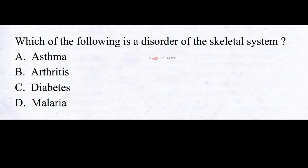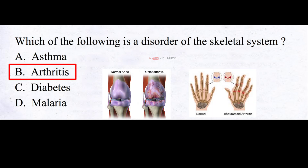Which of the following is a disorder of the skeletal system? A. Asthma, B. Arthritis, C. Diabetes, D. Malaria. And the correct answer is B. Arthritis. Arthritis is a disorder of the skeletal system. Arthritis is a term that refers to inflammation of one or more joints in the body.